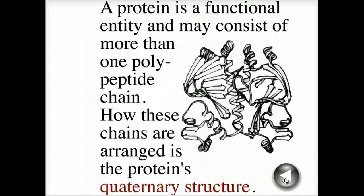A protein is a functional entity and may consist of more than one polypeptide chain, and more than one type of polypeptide chain. In addition, it may contain non-polypeptide components: metal ions, molecules like chlorophyll, hemoglobin, or retinol. How these chains are arranged is the protein's quaternary structure.